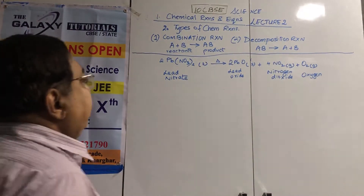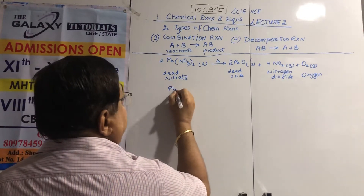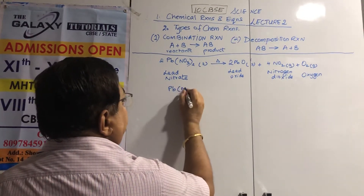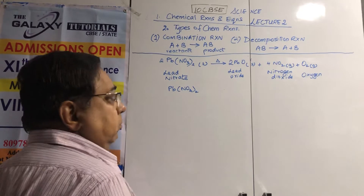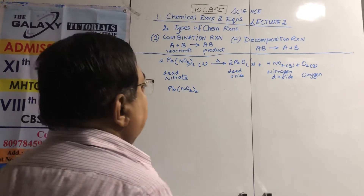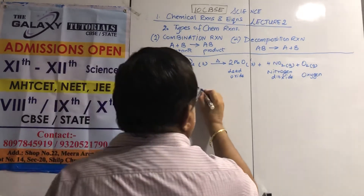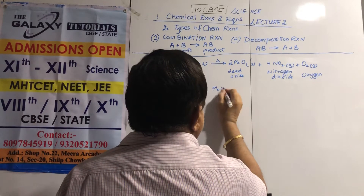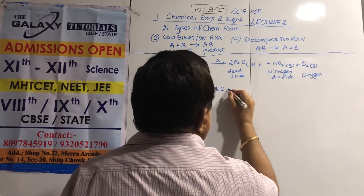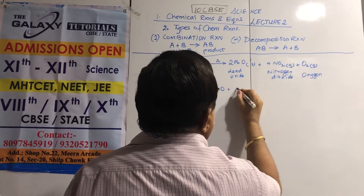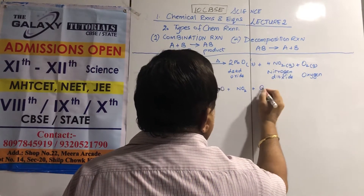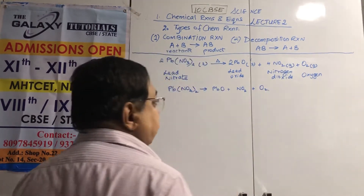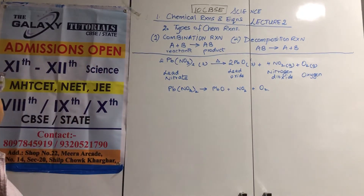To balance this, you must first know the formulas: lead nitrate is Pb(NO3)2, lead oxide is PbO, nitrogen dioxide is NO2, and oxygen is O2. Then balance step by step.